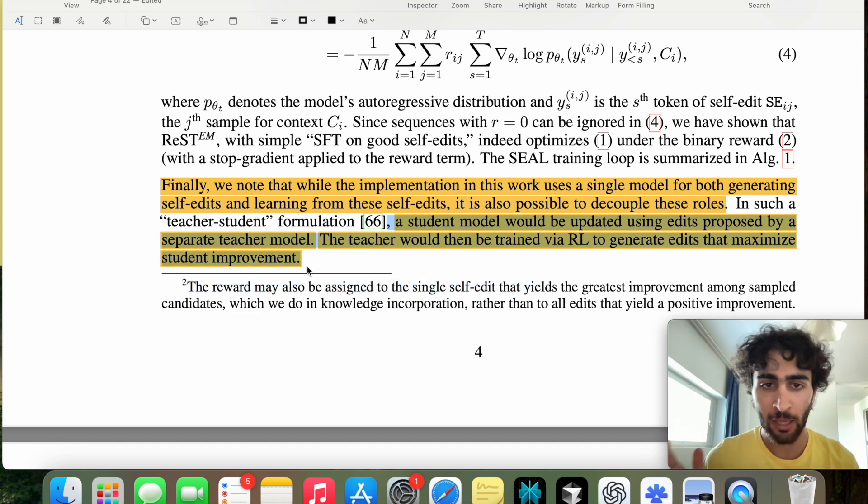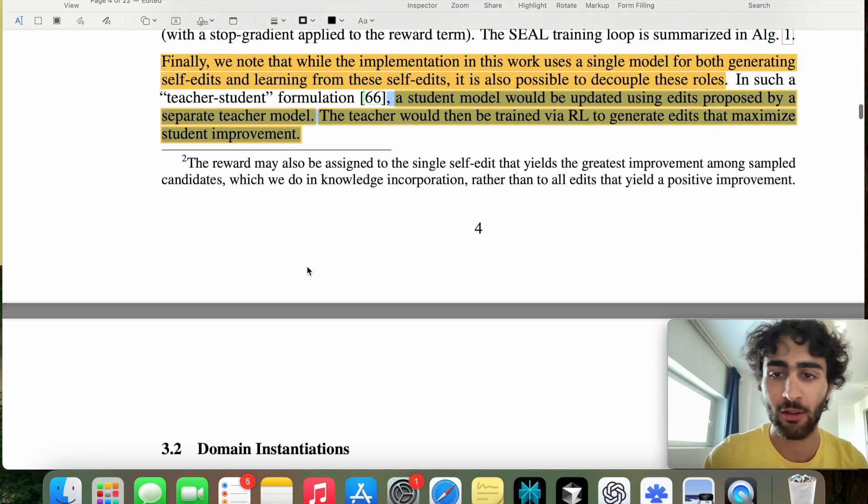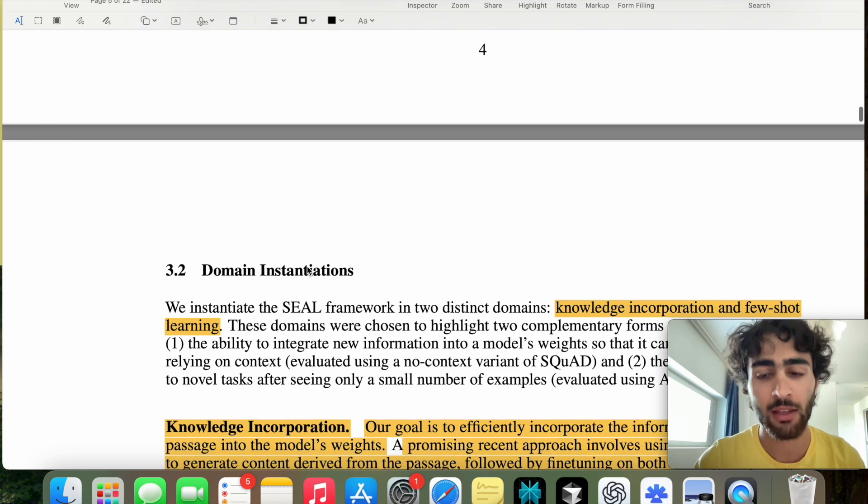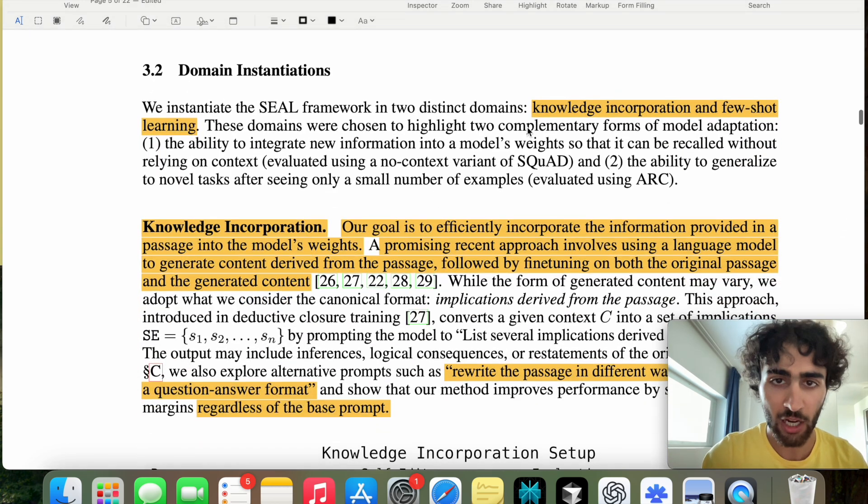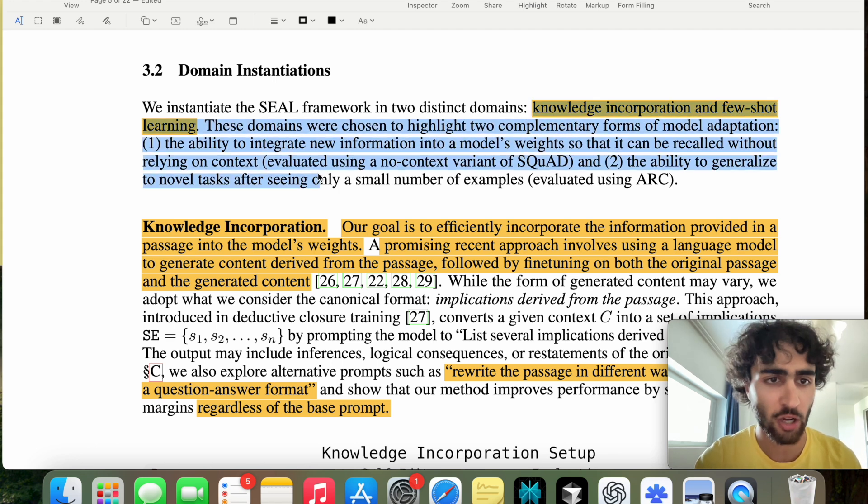So maybe a whole paper could be written just attempting this strategy. That sounds quite compelling. In fact, I just thought of this, but for the time being, it's only a single model. Honestly, if you can reduce complexity, then that usually is good overall, but this is just a general statement. So we talk about two domains here, knowledge incorporation and few-shot learning.